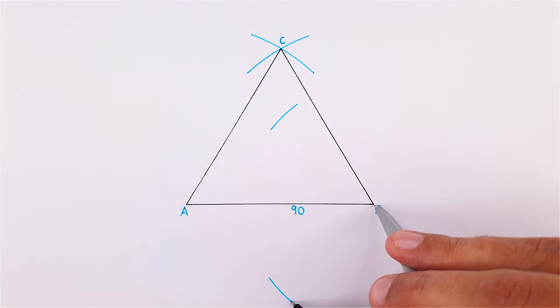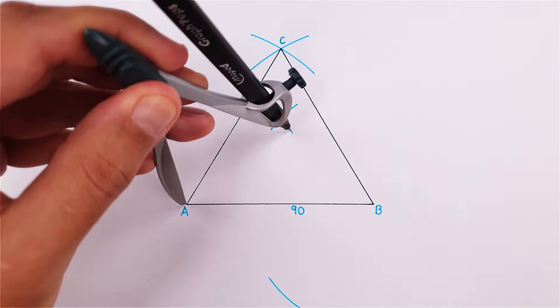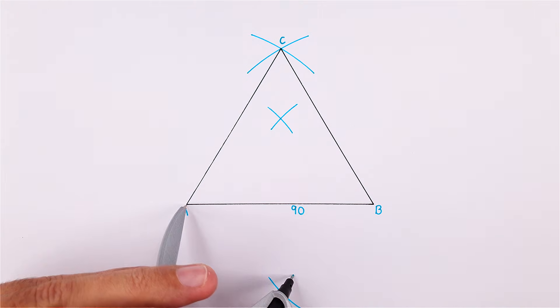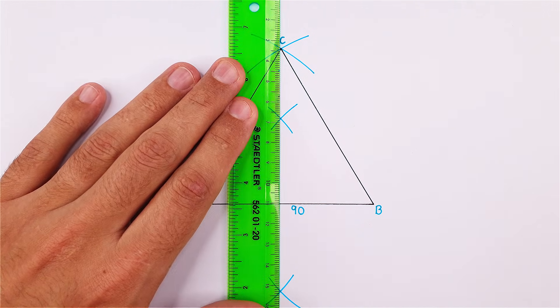Draw an arc above and below side AB. Using this same measurement, place your compass on point A and draw another arc above and below side AB. Draw a line through these two intersecting points to complete the perpendicular bisector.